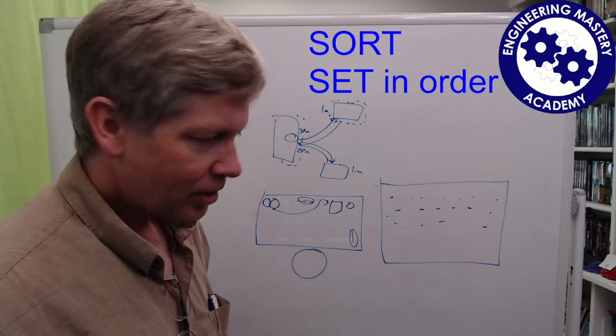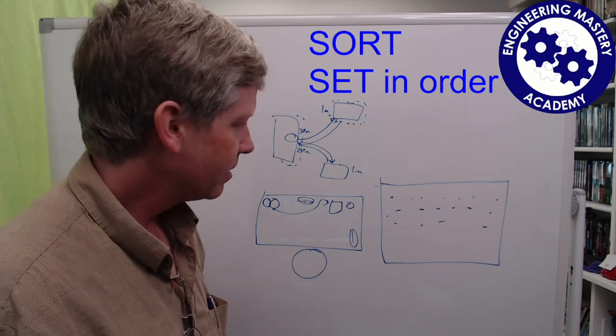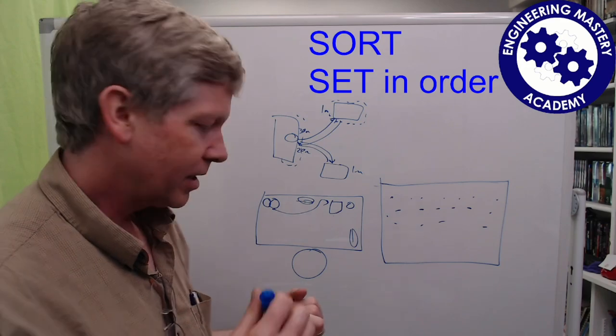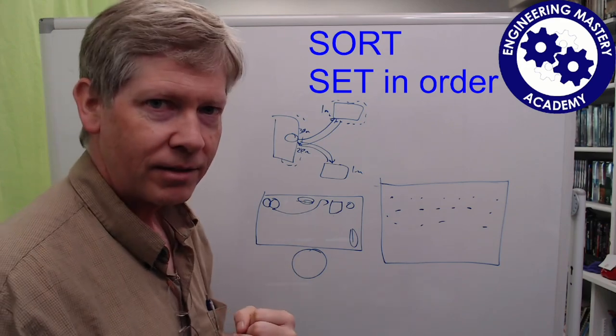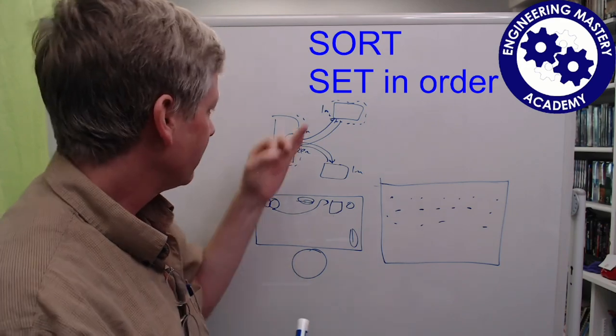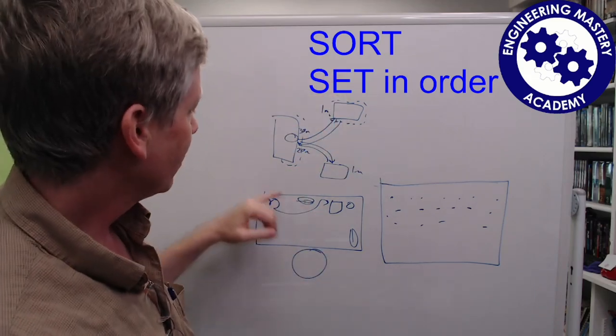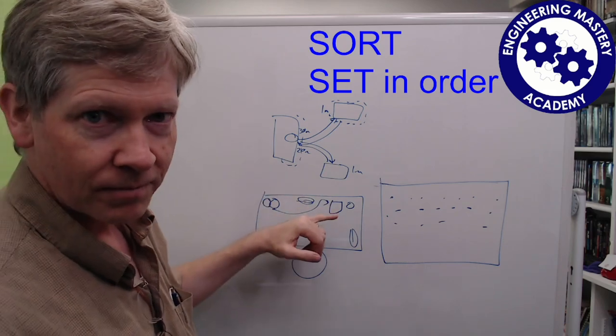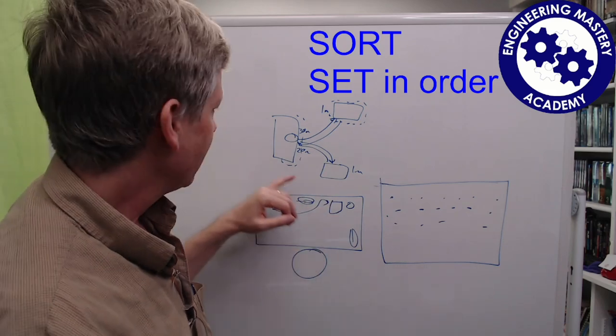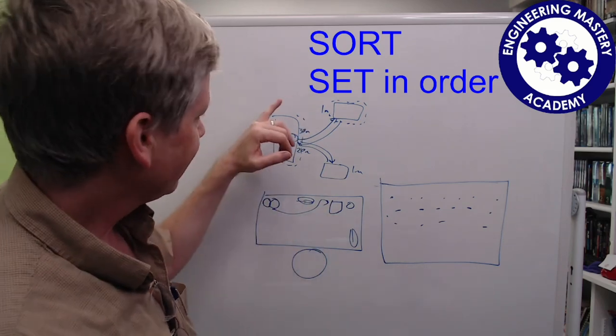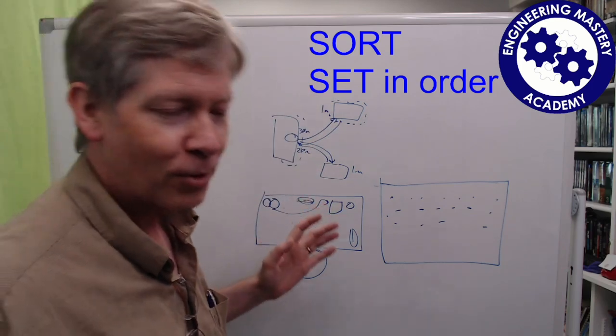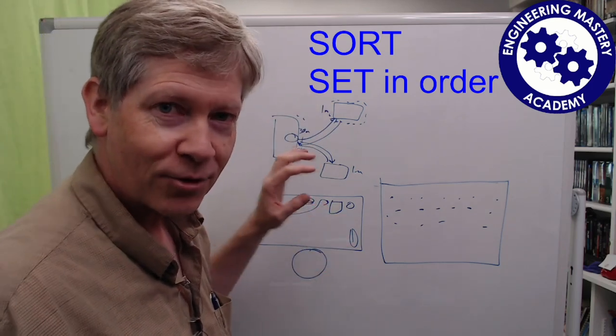So that's about all I have time for today. So again, measure your current state. Then you want to organize the manufacturing floor. Then you want to organize the individual stations. And again, the details of doing all this is far more than doing five minutes, but it gives you a starting point.